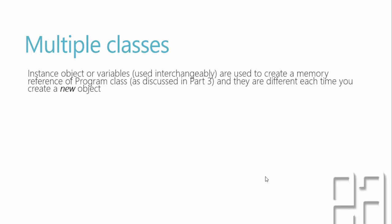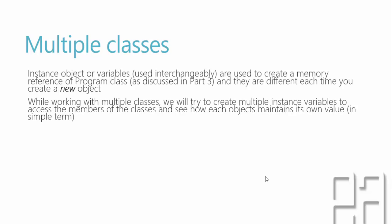Instance objects or variables are used to create a memory reference of program classes, as we discussed in part 3, and they are different each time you create a new object. There is a keyword called new within our class. If you create an object using the new keyword, you reserve memory into the instance variable.